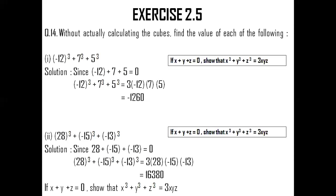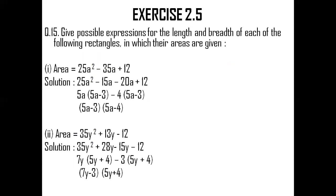Let us quickly solve the remaining two sums. Question number 15 says: give possible expressions for the length and breadth of each of the following rectangles in which the area is given. The area for the first question is 25a squared minus 35a plus 12. Using middle term splitting, which we have learned thoroughly in the previous sessions, I get the answer as 5a minus 3 and 5a minus 4 — one of them is length, the other is breadth. Likewise, for the second question, the area is 35y squared plus 13y minus 12. Middle term splitting gives 7y minus 3 and 5y plus 4, wherein one can be taken as length and the other as breadth.